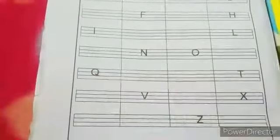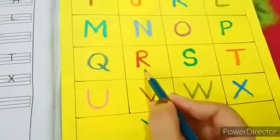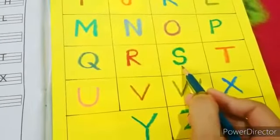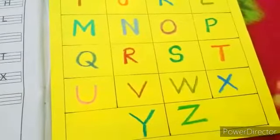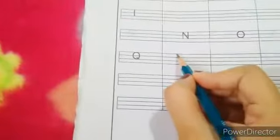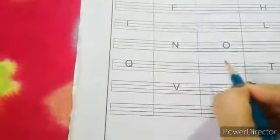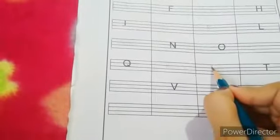Q is given over here. Let's find out what are the missing letters after Q. Let's see the chart again. Q, R, S. So the missing letters are R and S. R, S.